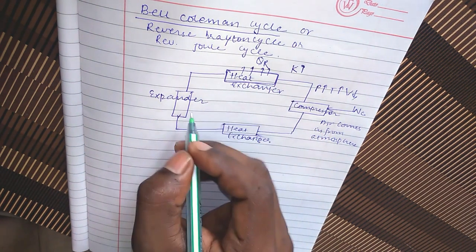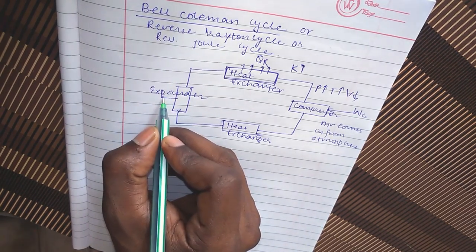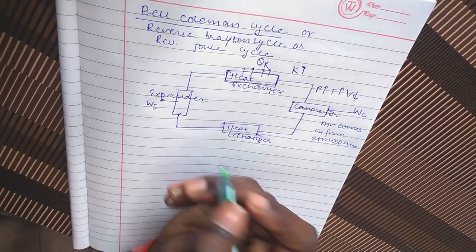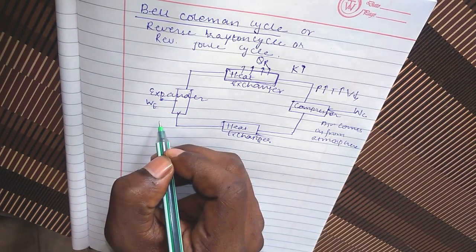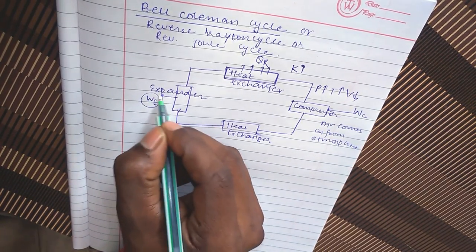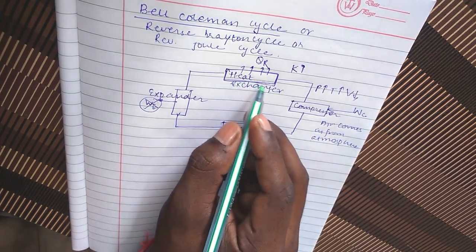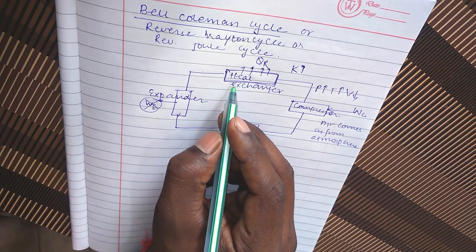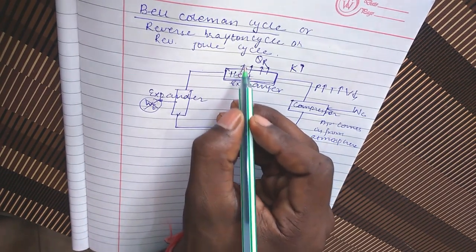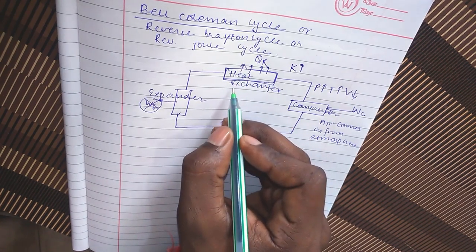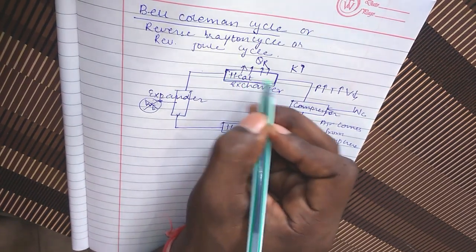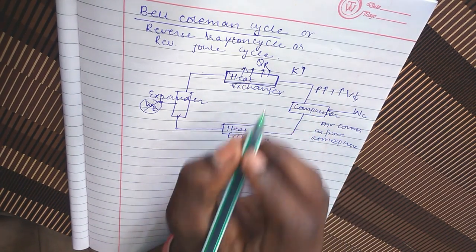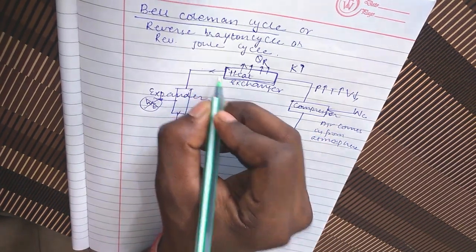Heat is released in heat exchanger. Now after that it goes to the expander. Here we get a negligible amount of work, or you can say a turbine WT, but it is very small amount, negligible, so we don't consider this. When the air comes out from heat exchanger, then it is a little bit cool. Air is also a refrigerant.